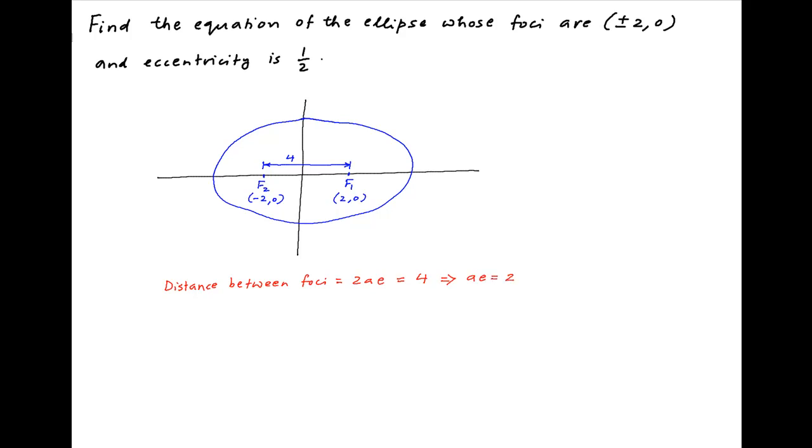But we are given that the eccentricity E is equal to 1/2. Therefore, A is equal to 2 divided by 1/2, which is equal to 4.